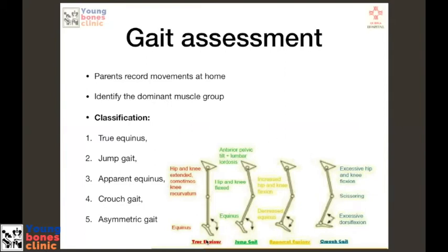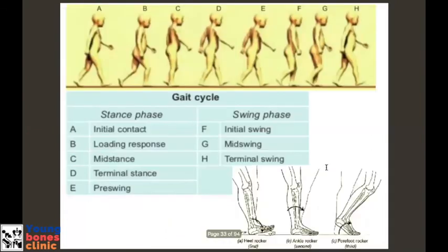There are four basic gait types: true equinus, jump gait, apparent equinus, and crouch gait. In true equinus, the hip and knees are usually extended and the ankle is in equinus. In jump gait, the hip and knee are in flexion with equinus at the ankle. In apparent equinus, there is no true equinus but the hip and knee are in flexion. In crouch gait — the worst and most disabling type — there is excessive hip flexion, knee flexion, scissoring due to adductor spasticity, and excessive dorsiflexion, with the foot going into calcaneus.